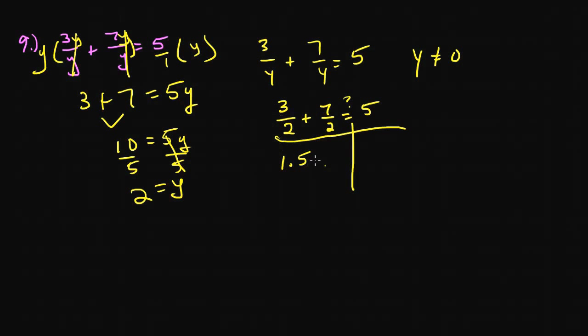So 3 halves is 1.5, and 7 halves is 2.5. Now, the question is, does that equal 5? Well, yeah, 1 plus 2... Oh, I made a mistake, didn't I? It's not 2.5. 7 halves is 3.5. So 1 plus 3 is 4, plus 0.5 plus 0.5 is 1, and yes, 5 in fact does equal 5.